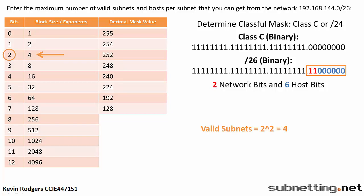Finally, we'll do the same thing for the hosts. Count the host bits, or zeros, and find that number in the bits column. Parallel to the bits is our number: 64 minus 1 for the broadcast address, and minus 1 for the network ID, leaves us with 62 hosts per subnet.